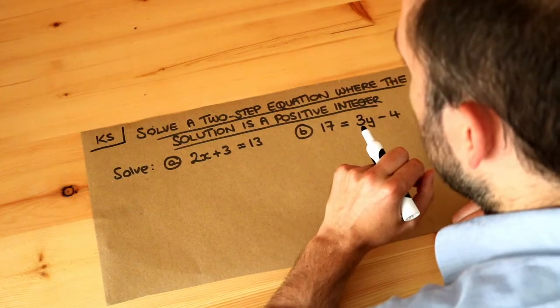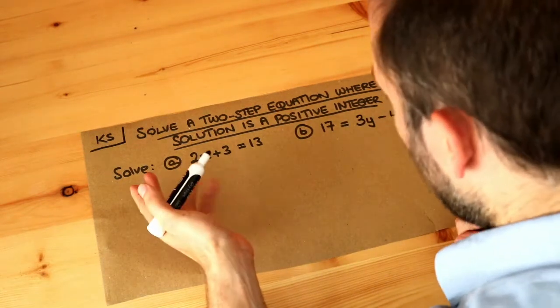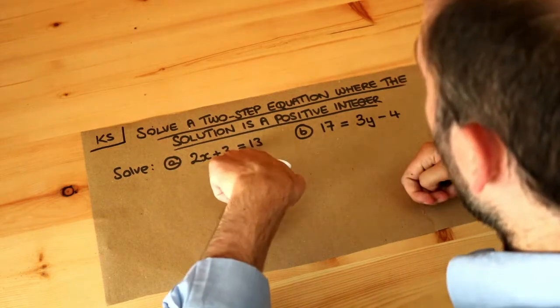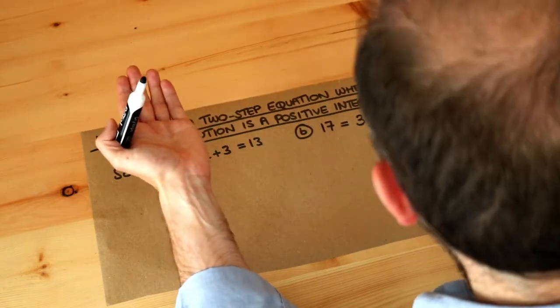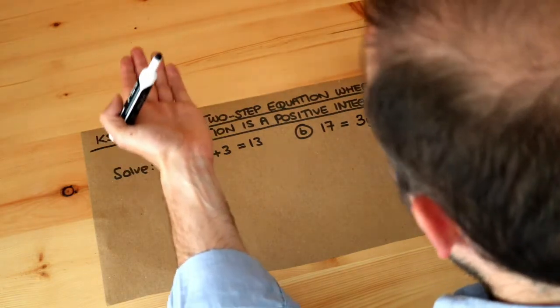Now the one thing you need to remember for this video is that whatever you do to one side of the equation, you have to do to the other, because an equation is like a sort of scales. If you take something off one side of the scales, you have to take something off the other side of the scales to make them balance.